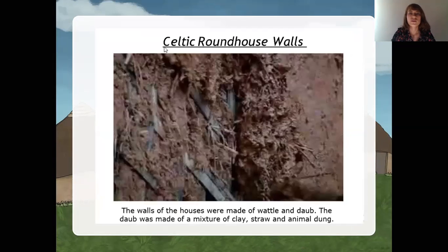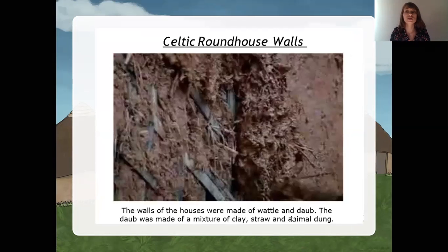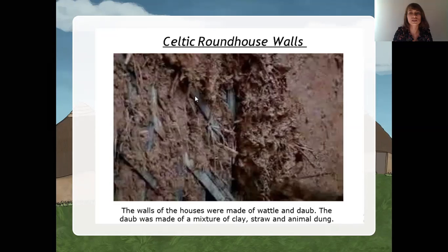The walls of the Celtic roundhouse were made of wattle and daub. The daub was made of a mixture of clay, straw, and animal dung. As you can see here, this is the wattle and here is the daub — made of a mixture of clay, straw, and animal dung, so animal poop.